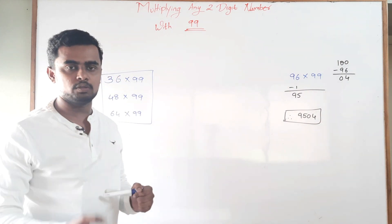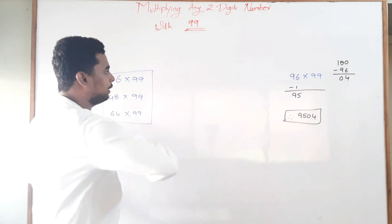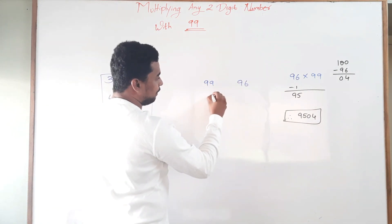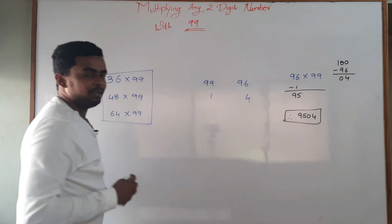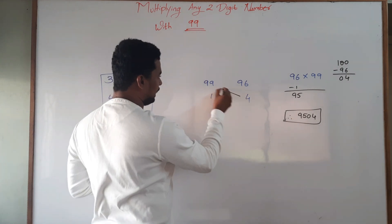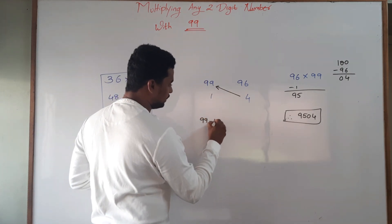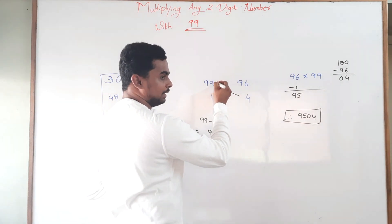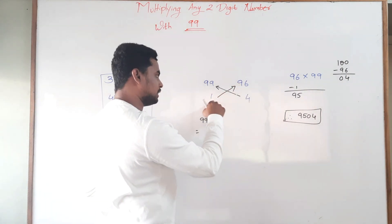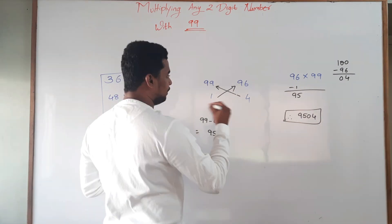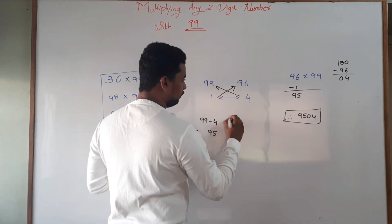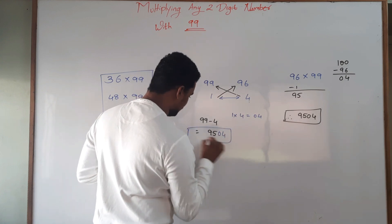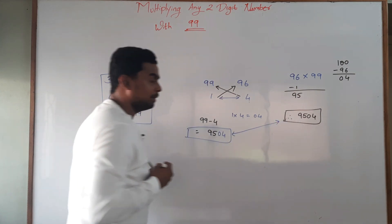Now we will cross-verify this answer with the trick studied in a previous video. For 99 and 96: 100 minus 1 gives 99, and 100 minus 4 gives 96. Subtracting: 99 minus 4 gives 95 — or equivalently, 96 minus 1 also gives 95. Next, multiplying the differences: 1 multiplied by 4 gives 4. So the answer is 9504, which matches — confirming that today's trick is correct.